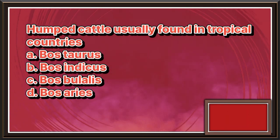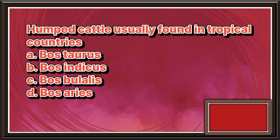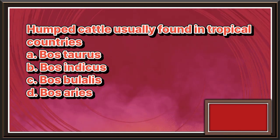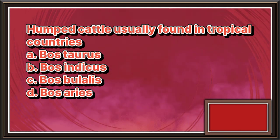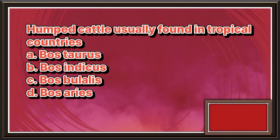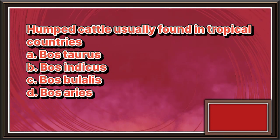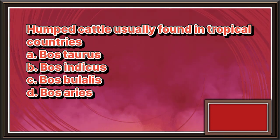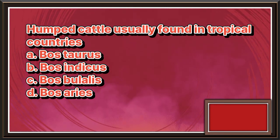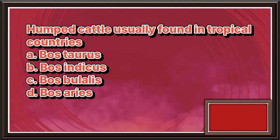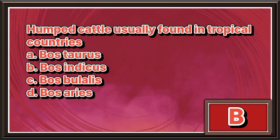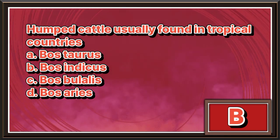Humped cattle usually found in tropical countries. A. Bos taurus. B. Bos indicus. C. Bos bubalis. D. Bos aries. The answer is letter B.